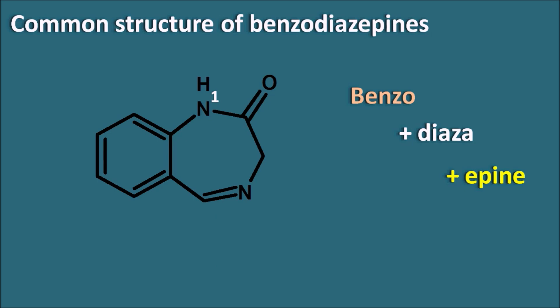Numbering the Benzodiazepine ring: nitrogen is at position one, then two, three, four, five, six, seven, eight, and nine — we do not number the fused carbons. Since nitrogens are present at the first and fourth positions, Benzodiazepines are also called 1,4-Benzodiazepines.